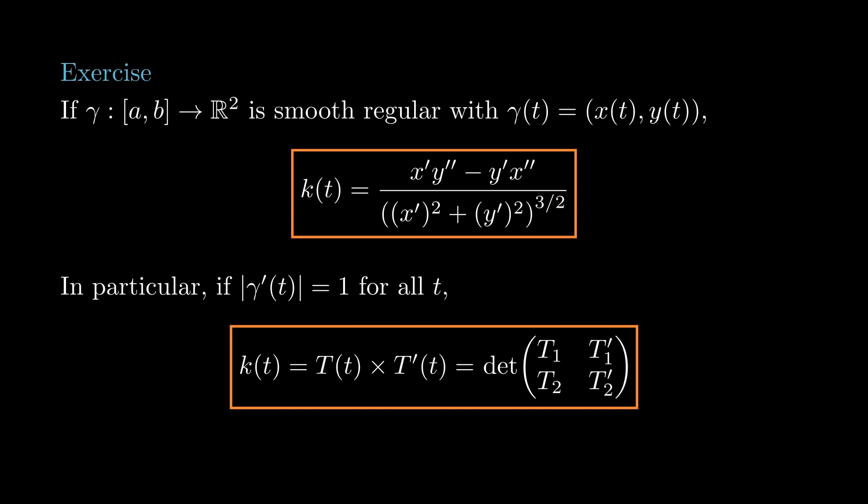This should make sense as the concept of signed curvature is quite natural. If we are driving a car, the curvature of our trajectory coincides with the position of the steering wheel. Positive if we are turning left, and negative if we are turning right.